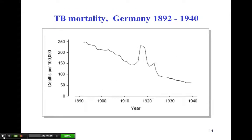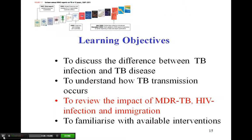In terms of mortality, we see here the story of Germany. There was a constant decline over a few centuries, with a peak corresponding to the First World War, and a second peak corresponding to the Second World War. This is because there is a direct relationship between mortality and socio-economic factors: more stress, malnutrition, and other adverse socio-economic health conditions.